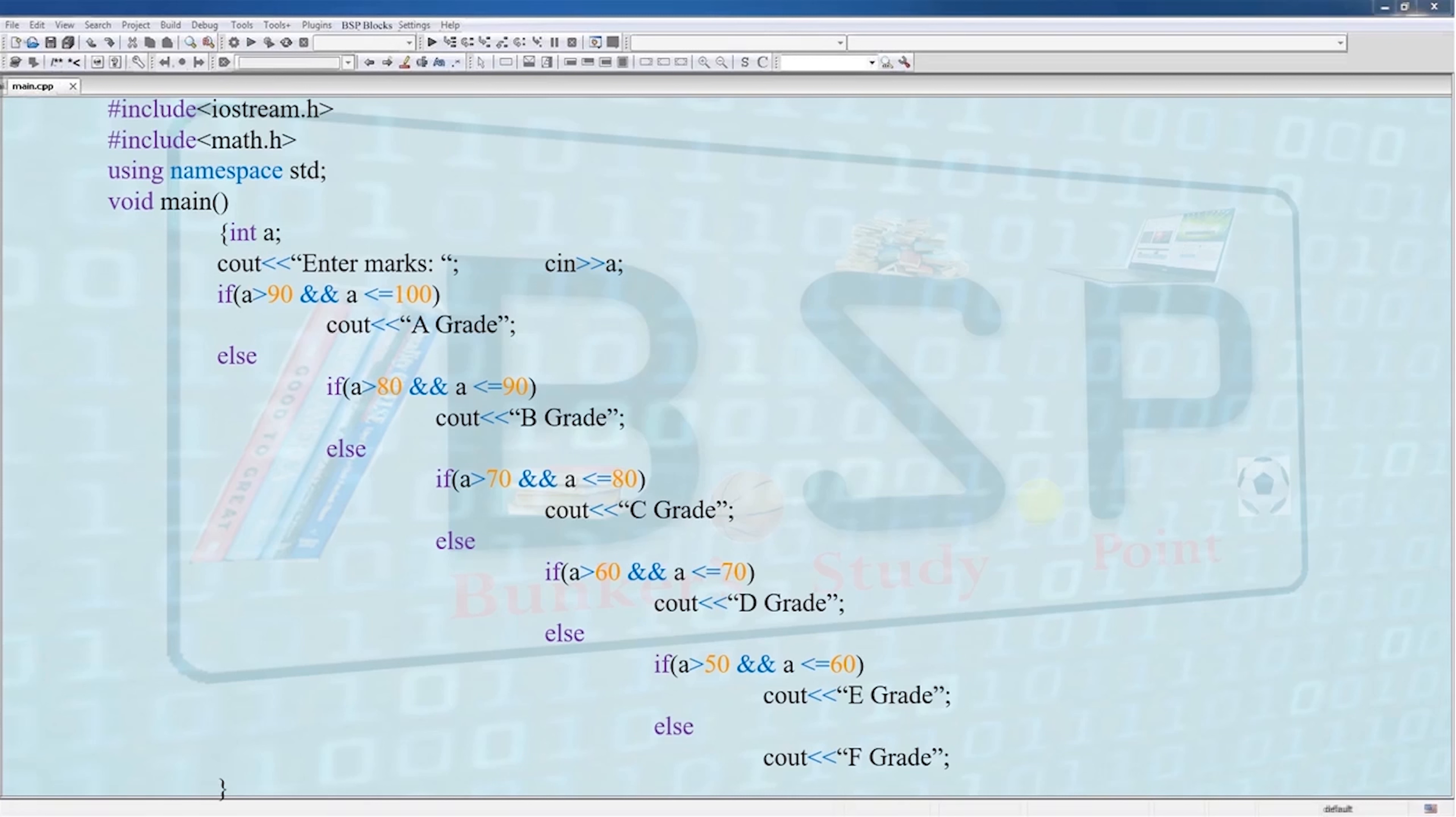Only then the following action will occur. In the else part of this if, we get another if-else block in which we compare a in the range of 80 and 90. The tree goes on, and at the last we have if a is greater than 50 and a is less than or equal to 60, then the E grade, else there is nothing left to compare, that is directly F grade.